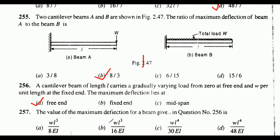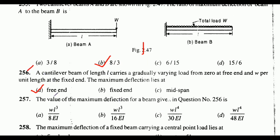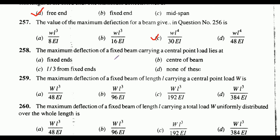The value of the maximum deflection for the beam in question 256 — the correct answer is option C: wl⁴ / 30EI. Next, the maximum deflection of a fixed beam of length l carrying a central point load lies at: fixed end, center of beam, l/3 from the fixed ends, or none of these. The correct answer is option B: center of beam.